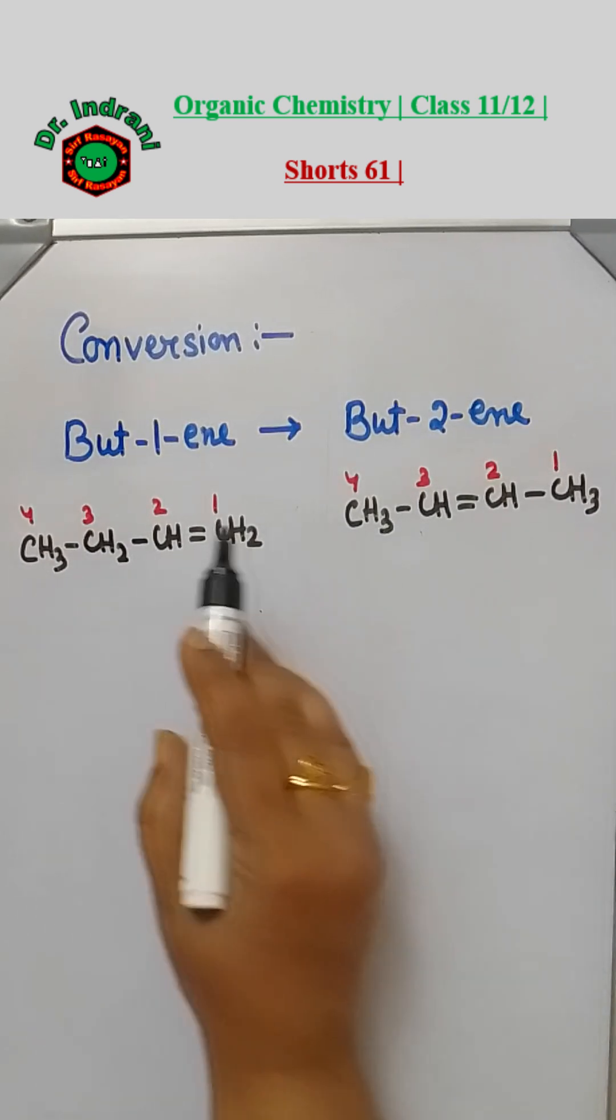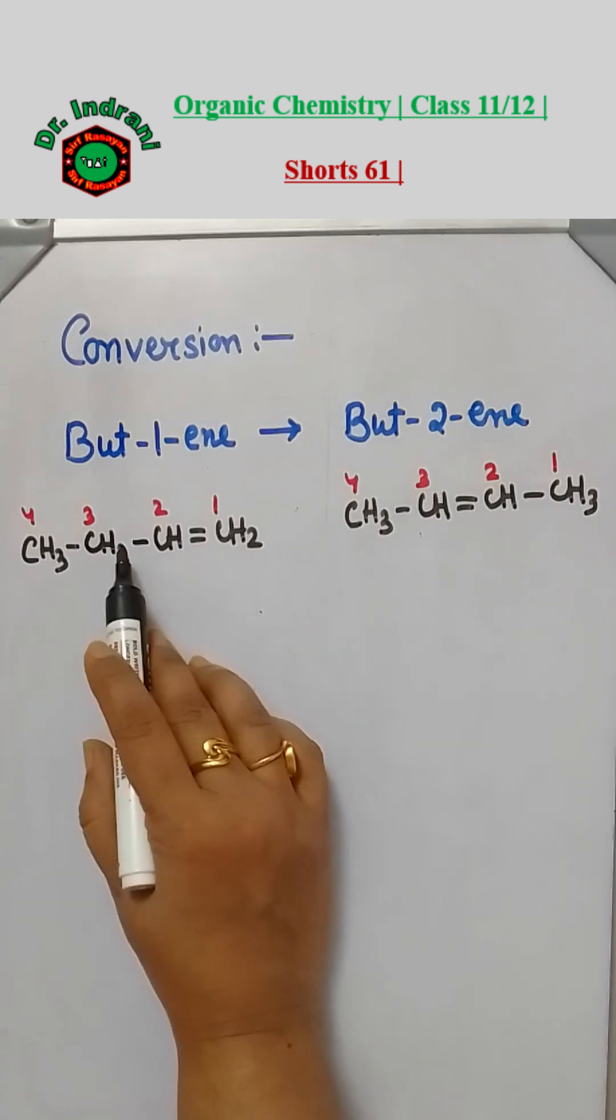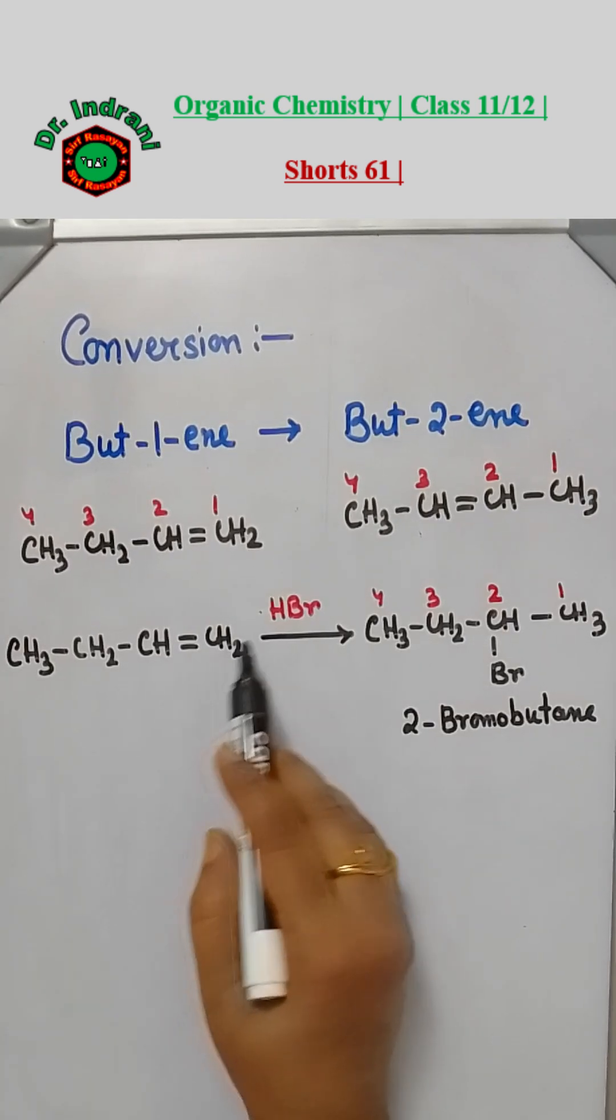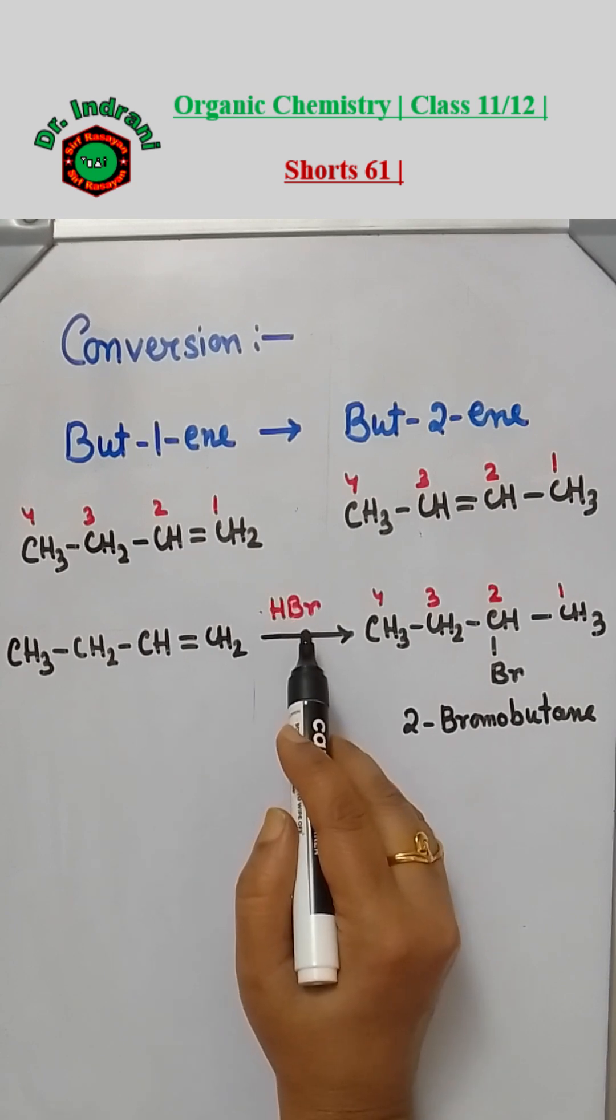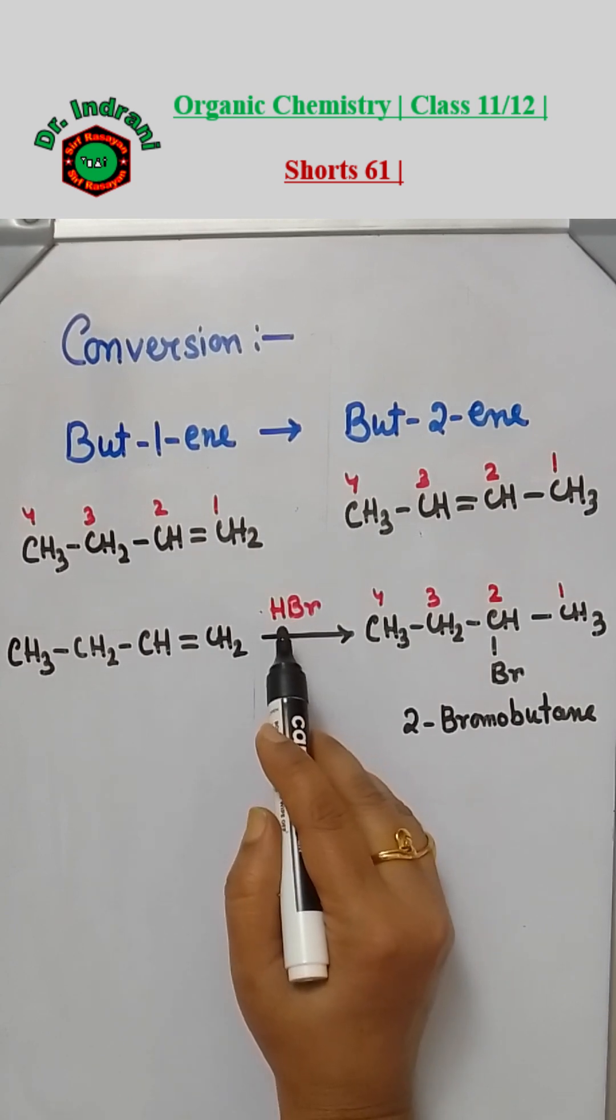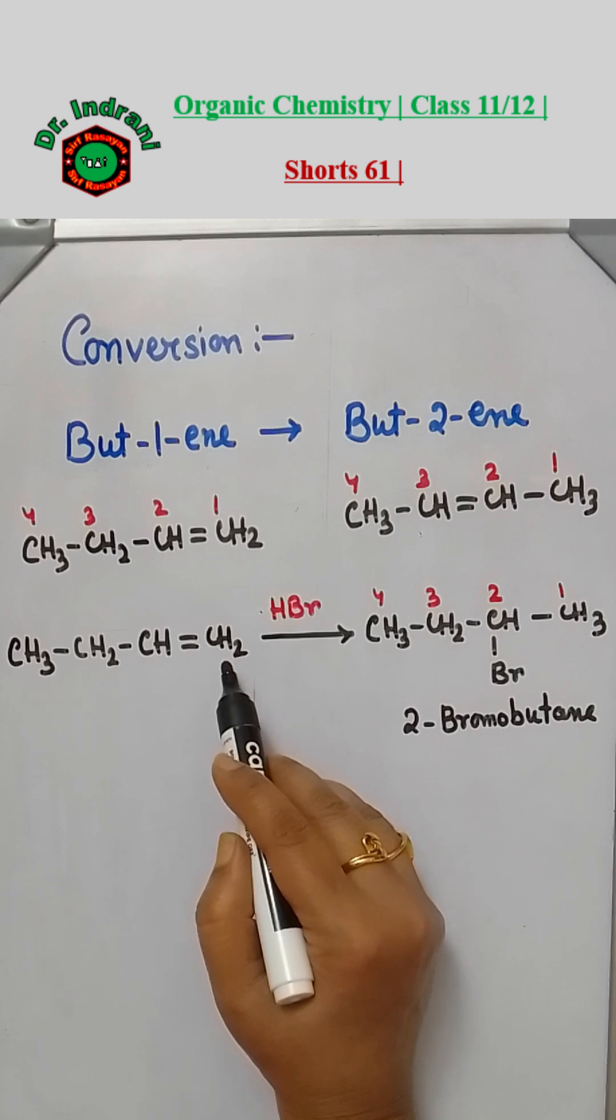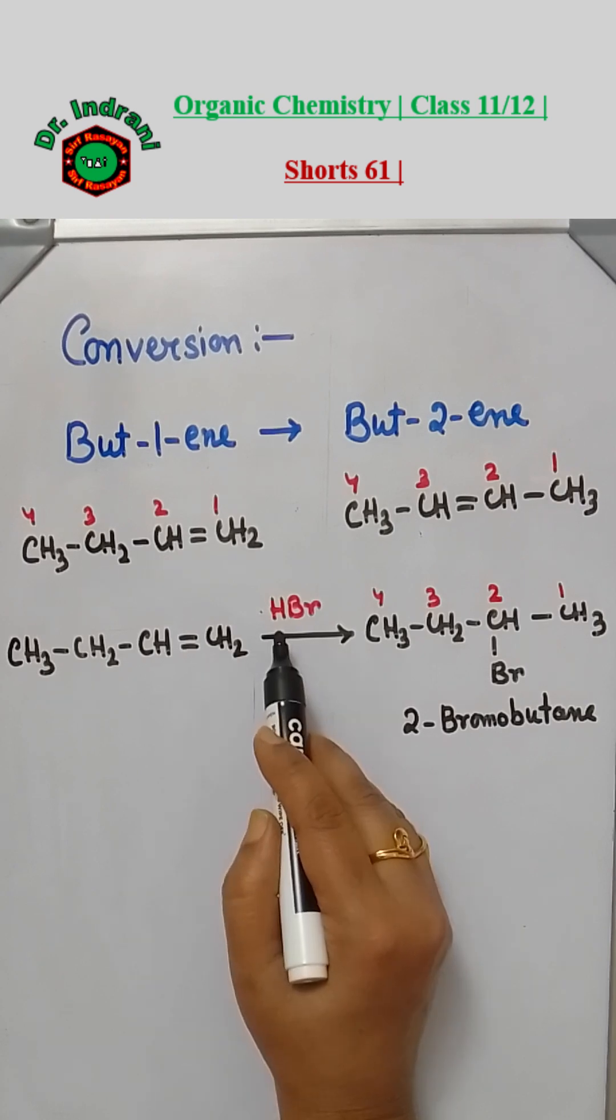What we have to do is shift this double bond from here to this position. First step, you have to add HBr. Markovnikov addition will take place, so hydrogen will go to that carbon which is having more number of hydrogen atoms.